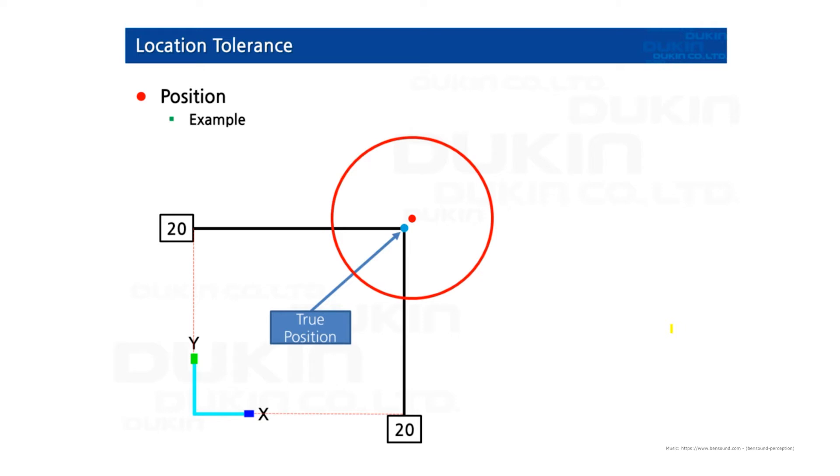And here's the red circle and you can see the center of the measured circle. So in other words, the GD&T position tolerance is how far your feature's location can vary from its true position.